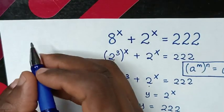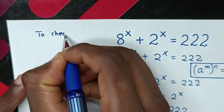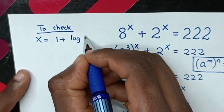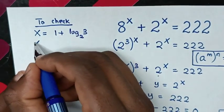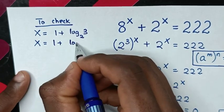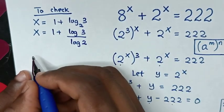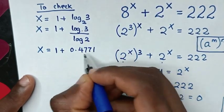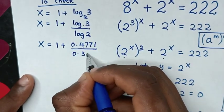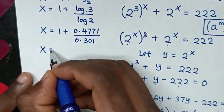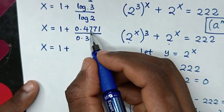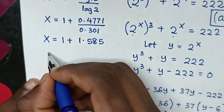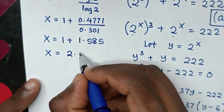To check the answer, we verify x = 1 + log₂(3). Using the change of base formula, log₂(3) = log(3)/log(2) = 0.4771/0.301 ≈ 1.585. Therefore x ≈ 1 + 1.585 = 2.585.